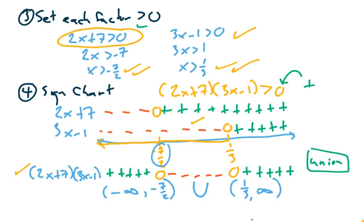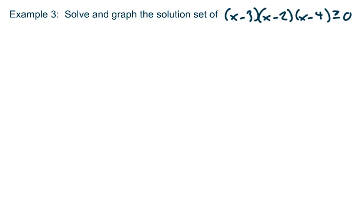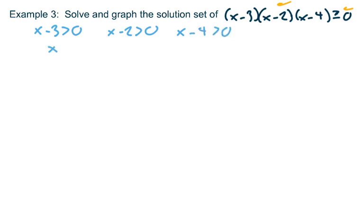Both examples so far are also called quadratic inequalities because the highest exponent is 2. This last example has three factors, so it's not quadratic, but the idea is the same. Steps one and two are already done — we have a zero on one side and the left side is completely factored. So we jump to step three: set each factor individually greater than zero and solve for x. These are easy — add 3 to both sides, add 2 to both sides, add 4 to both sides — giving x greater than 3, x greater than 2, and x greater than 4.